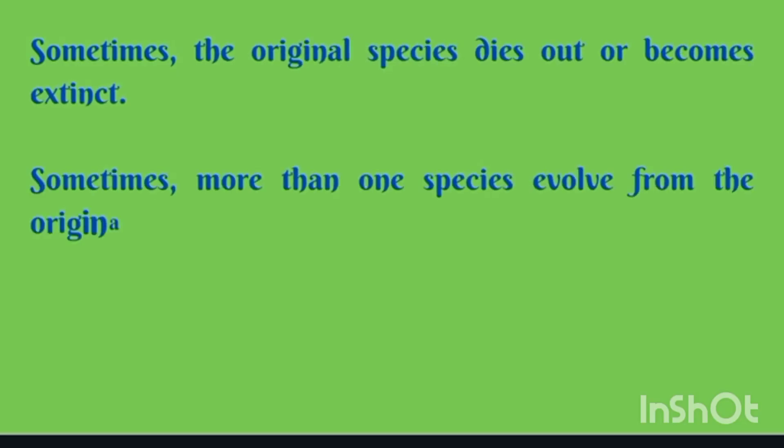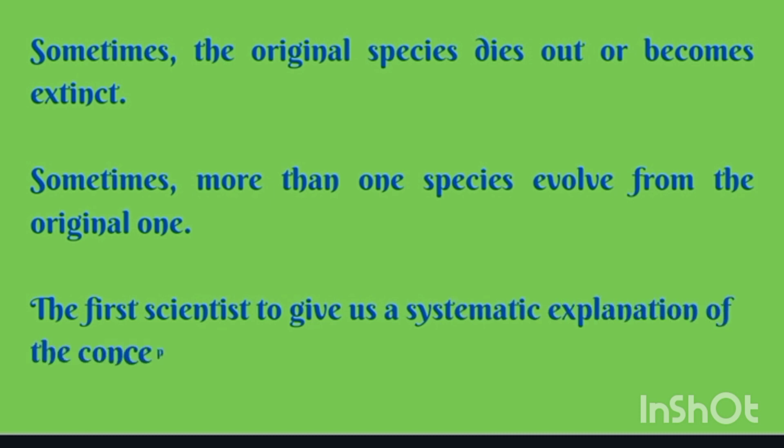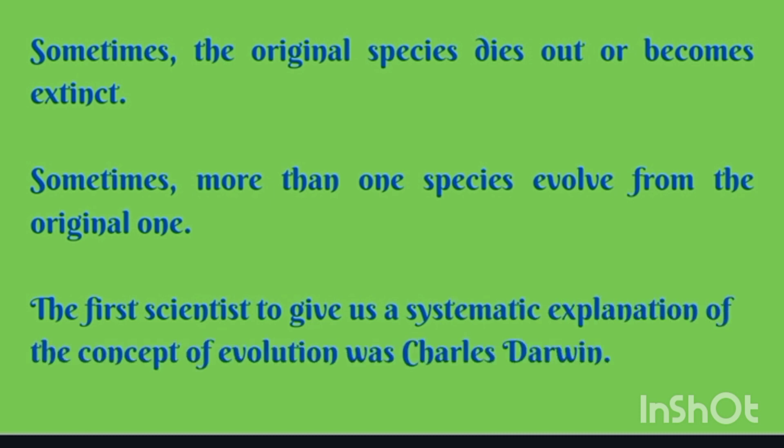Sometimes the original species dies out or becomes extinct. Sometimes more than one species evolved from the original one. The first scientist to give us a systematic explanation of the concept of evolution was Charles Darwin.